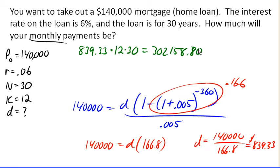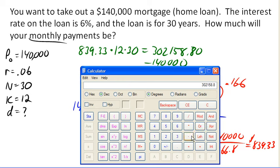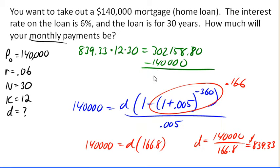Now if we take away the original loan amount, then we'll be left with, let's take away 140,000. One more zero there. That leaves me with 162,158.80 in interest.